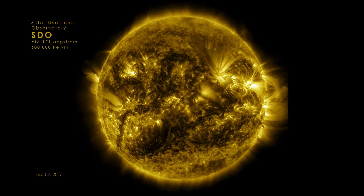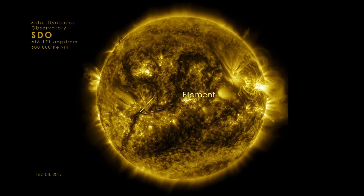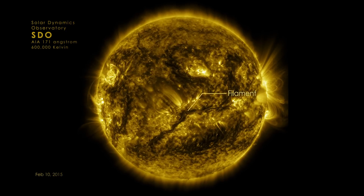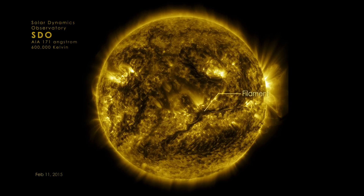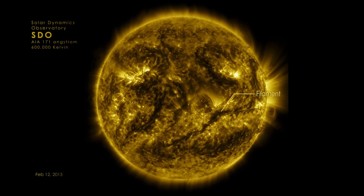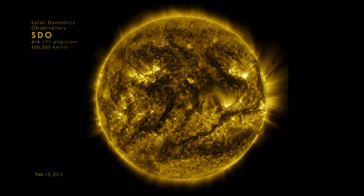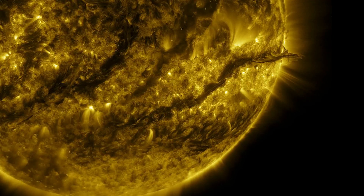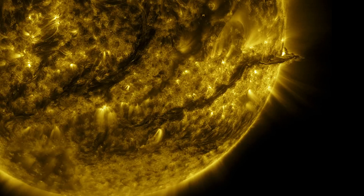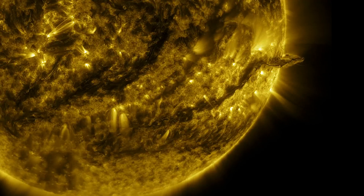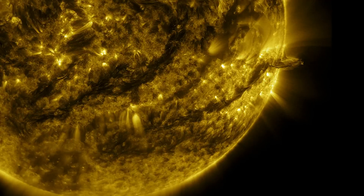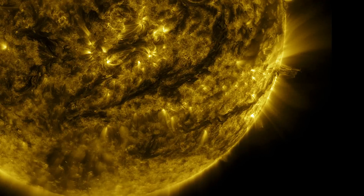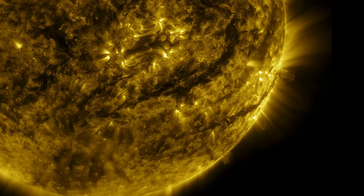What we're seeing here is a filament. It looks very dark, and it looks like it's actually on the surface of the sun. But as the sun rotates around, we can see it's suspended high up in the atmosphere away from the surface. When viewed from this angle, we call them prominences.